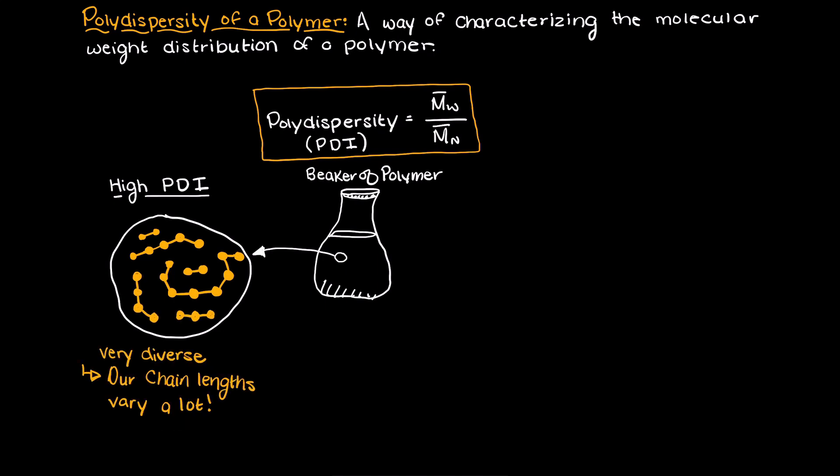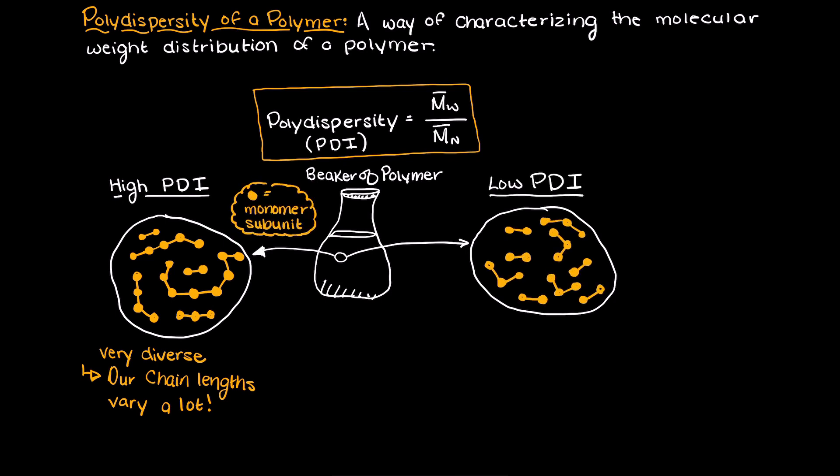Whereas if we have a low polydispersity index, the molar mass of the polymer sample are going to be highly concentrated.